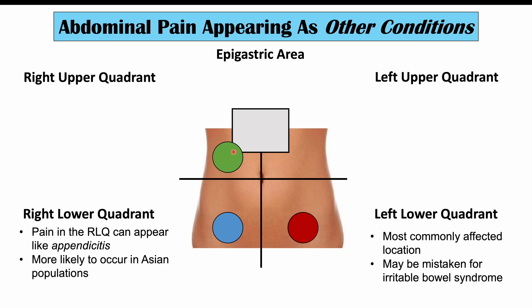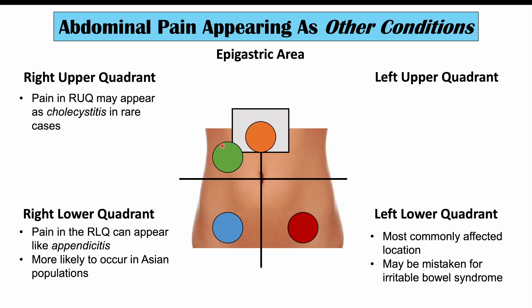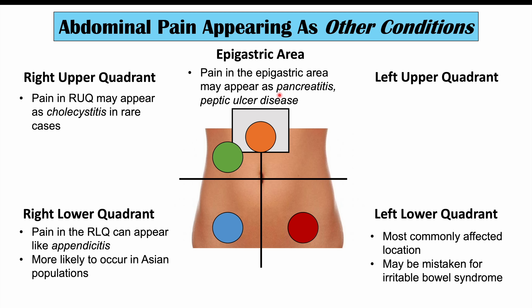Pain can also occur in the right upper quadrant, since the large intestine wraps through all quadrants via the ascending, transverse, and descending colon. Right upper quadrant pain in diverticulitis is more rare, but it may be misdiagnosed as cholecystitis — inflammation of the gallbladder, which is located in the right upper quadrant. We can also see pain in the epigastric area in rare cases, which can be mistaken for pancreatitis or peptic ulcer disease affecting the stomach or duodenum.